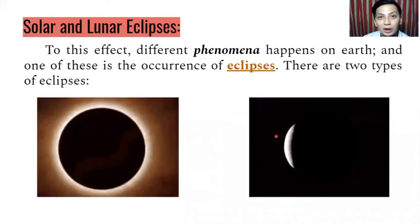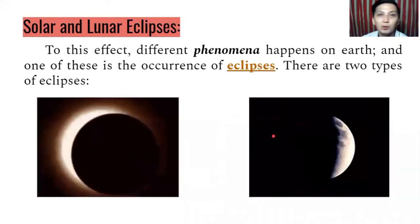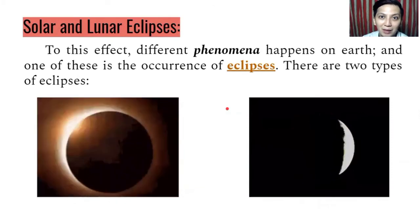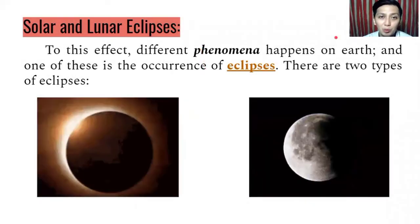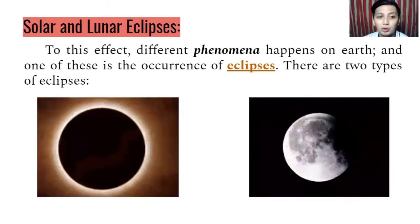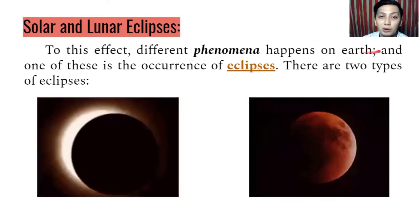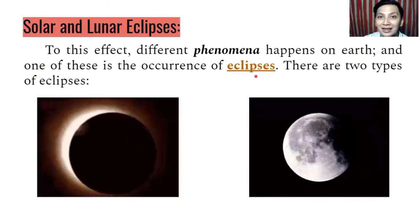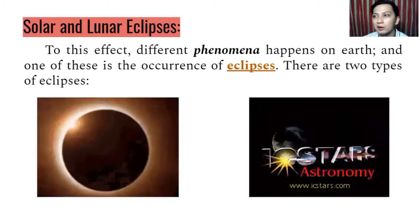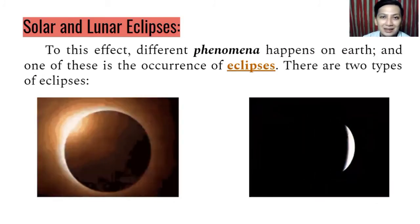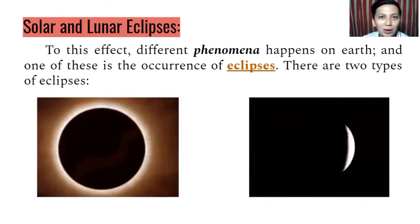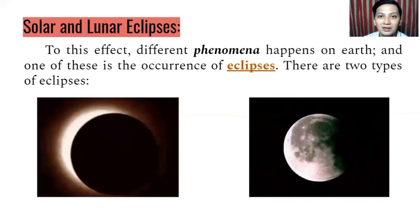We are going to tackle solar and lunar eclipses. How do these solar and lunar eclipses happen? Different phenomena happen on Earth, and one of these is the occurrence of eclipses — it's very prominent, especially for those fascinated with celestial bodies. If you love planets and everything about our universe, you will love this phenomena. There are two types of eclipses: solar eclipse and lunar eclipse.